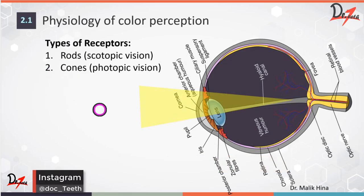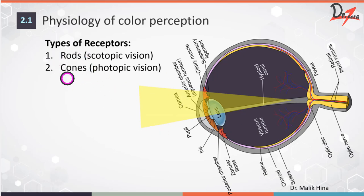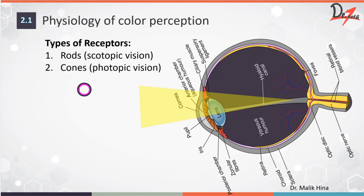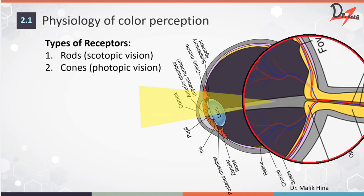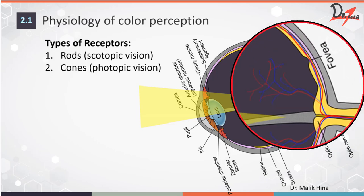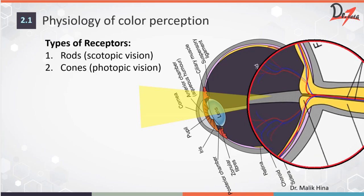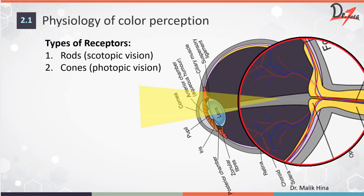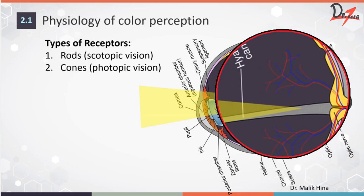We have two types of receptors in order to appreciate color: the rods and the cones. Rods are for scotopic vision, meaning they help in the interpretation of the brightness of an object. Cones are for photopic vision, meaning they are responsible for color vision — C for color, C for cones. The center of the retina has more cones while the periphery has more rods.